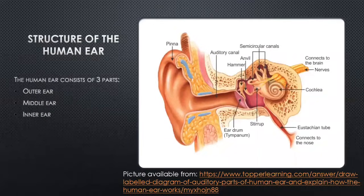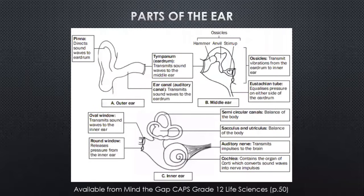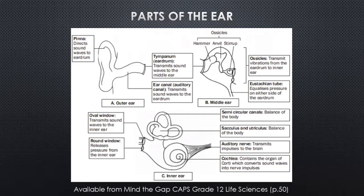Starting with the structure of the human ear — the human ear is made up of three parts: the outer, the middle, and the inner ear. I have a proper diagram on your screen. The outer ear consists of three parts: the pinna, the tympanum which is the eardrum, and the ear canal which is also known as the auditory canal.